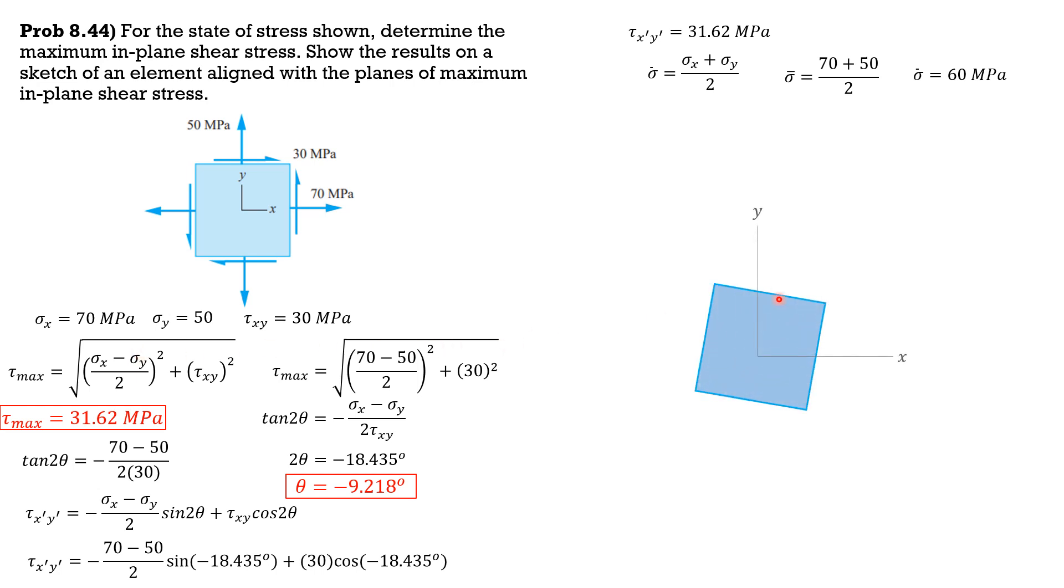So we have the plane at negative 9.218 degrees, and on this plane acts first, let's have the normal stress 60 tension, so pointing away, then 31.62. So on this face, up to the right, then down to the right, up to the left, down to the left, as shown. So that's it for this problem.